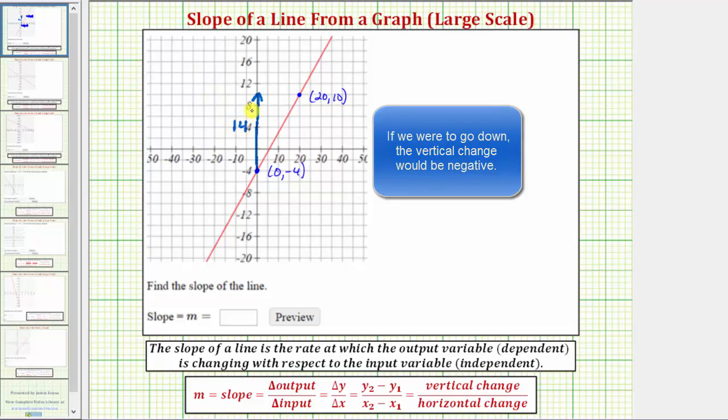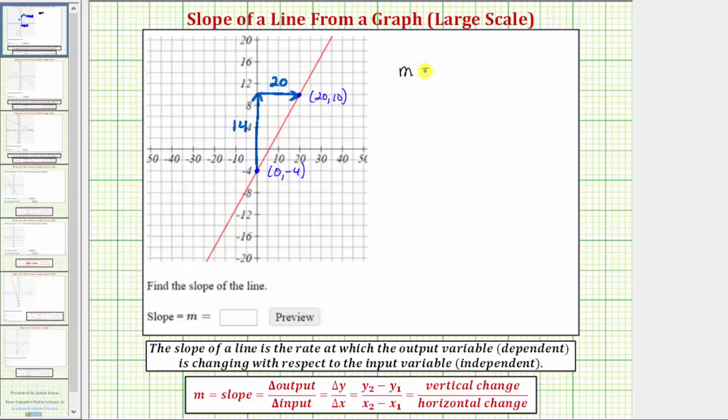Then from here, we'd have to go right 20 units, and therefore the horizontal change is positive 20. Now we know the slope m equals the vertical change divided by the horizontal change, would be 14 divided by 20, or 14/20.